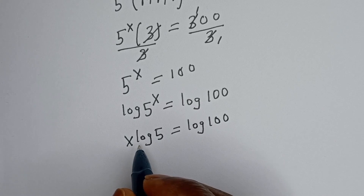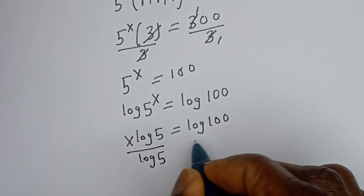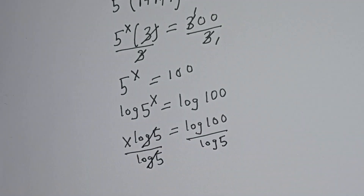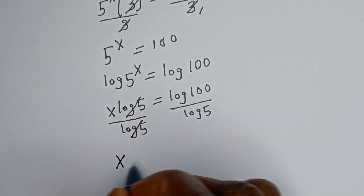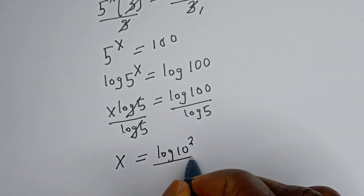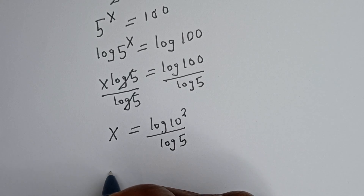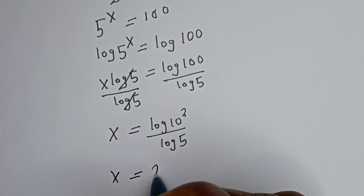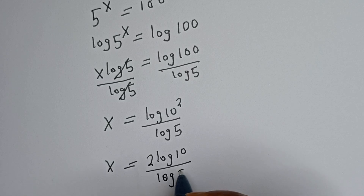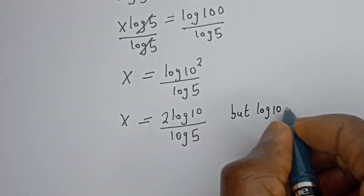We are looking for the value of s. Let's divide both sides of this equation by log 5 — this side divided by log 5 and this side divided by log 5. This cancels this, giving s is equal to log 100. We can write log 100 as log of 10 squared, divided by log 5. And s is equal to 2 log 10 divided by log 5. But log 10 is equal to 1.